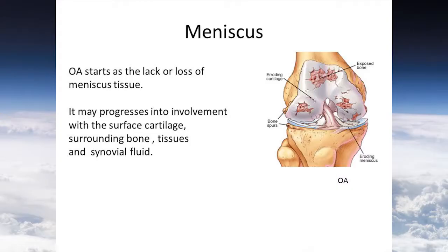Once the meniscus tissue is lost or the meniscus is injured, it will lead to the development of osteoarthritis. It may progress into the involvement of the surface cartilage and surrounding bones, tissues, or synovial fluid.